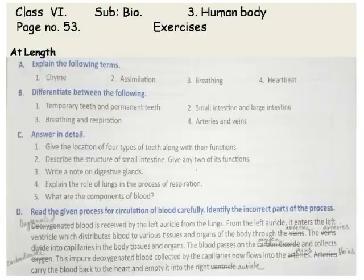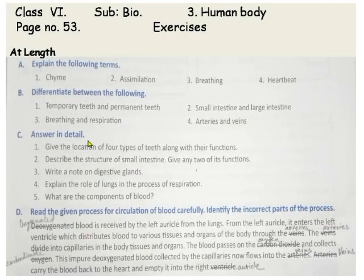Now come to the next question: answer in detail. Question number 1 — give the location of four types of teeth along with their functions. This question I have discussed earlier and I have given you the answer. Question number 3: write a note on digestive glands — you will write yourself. And question number 5 you can also write yourself. I will discuss question number 2 and question number 4.